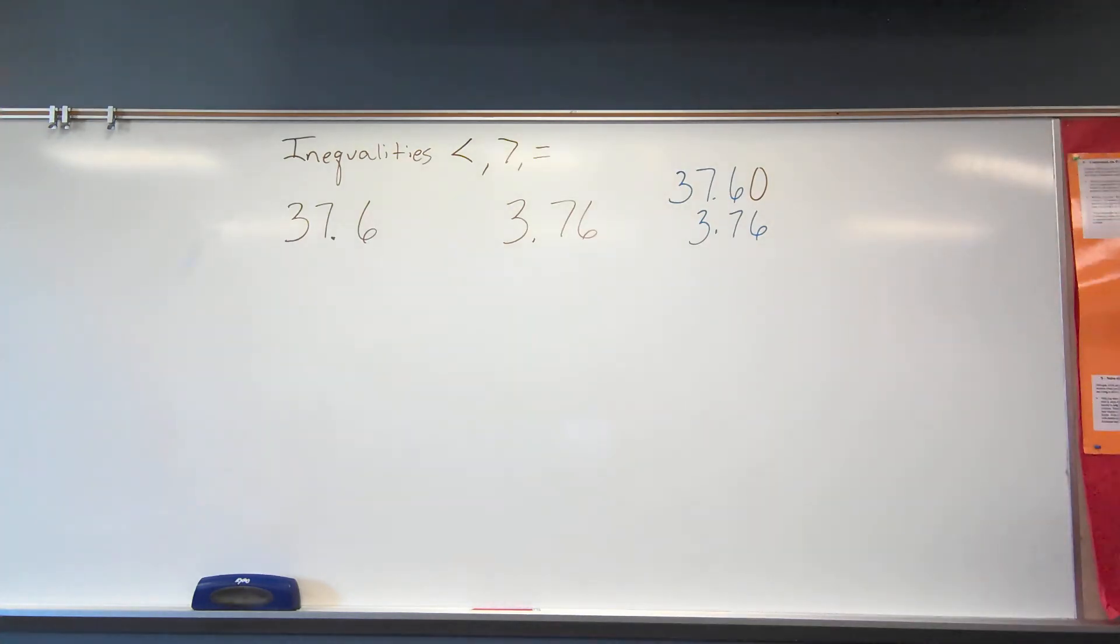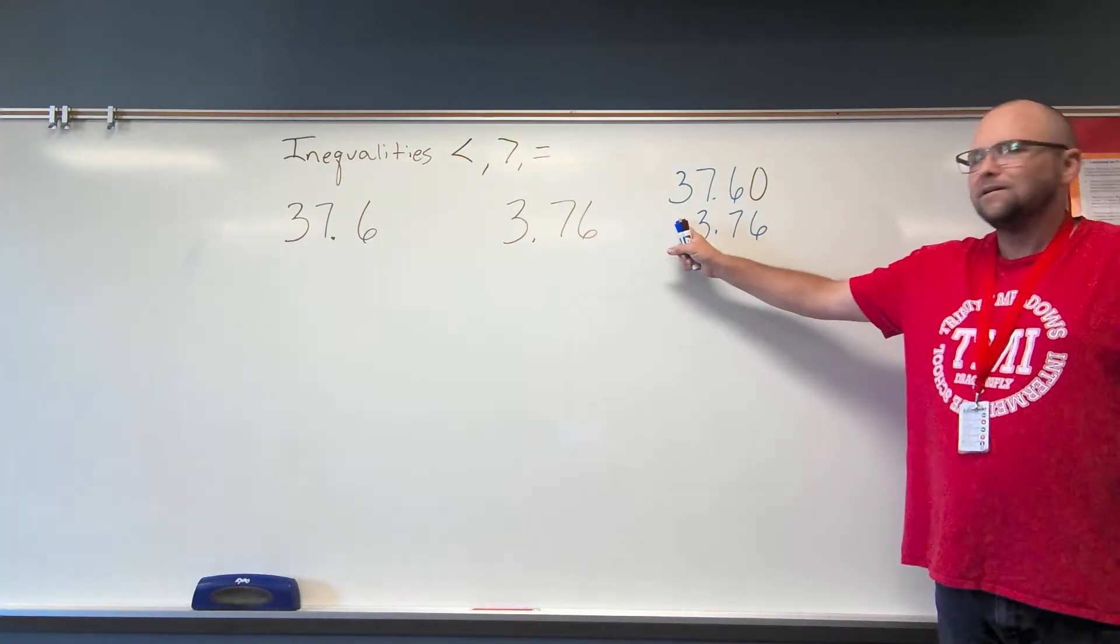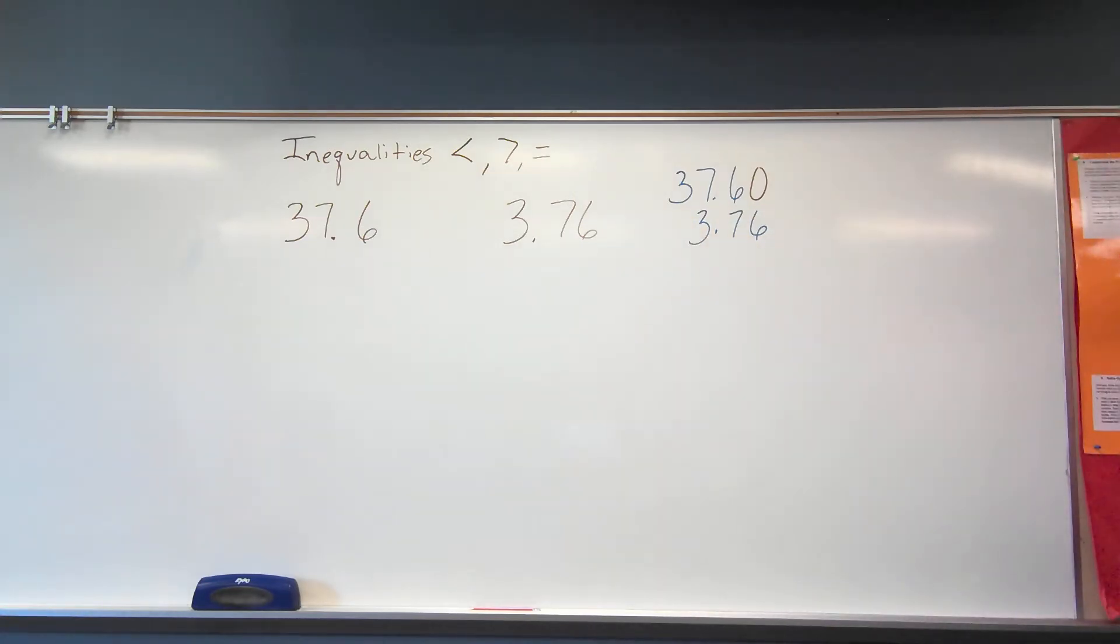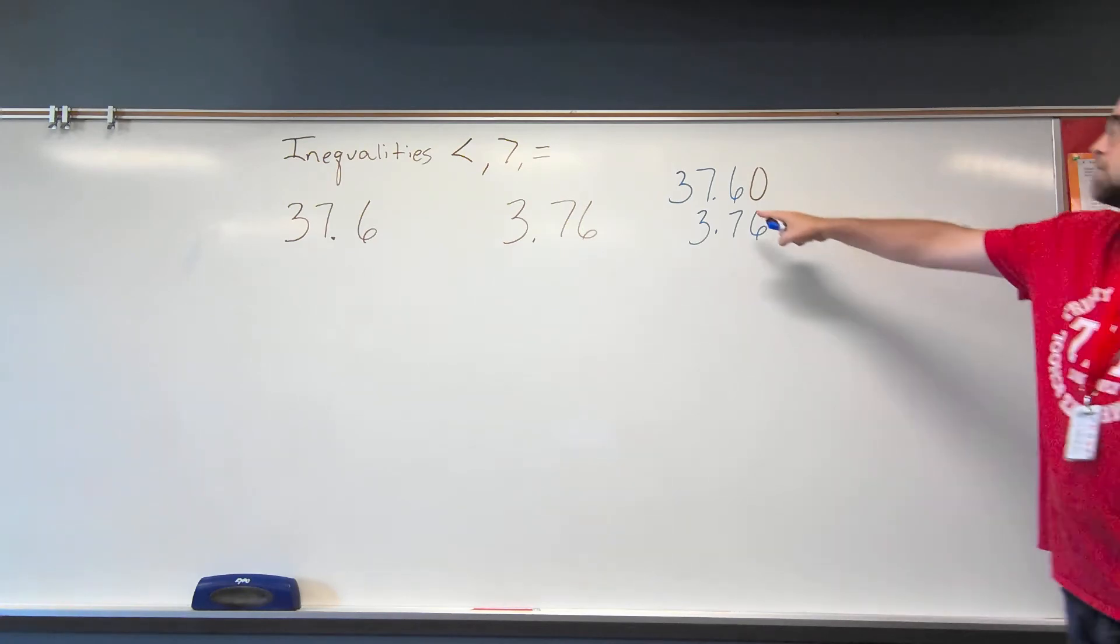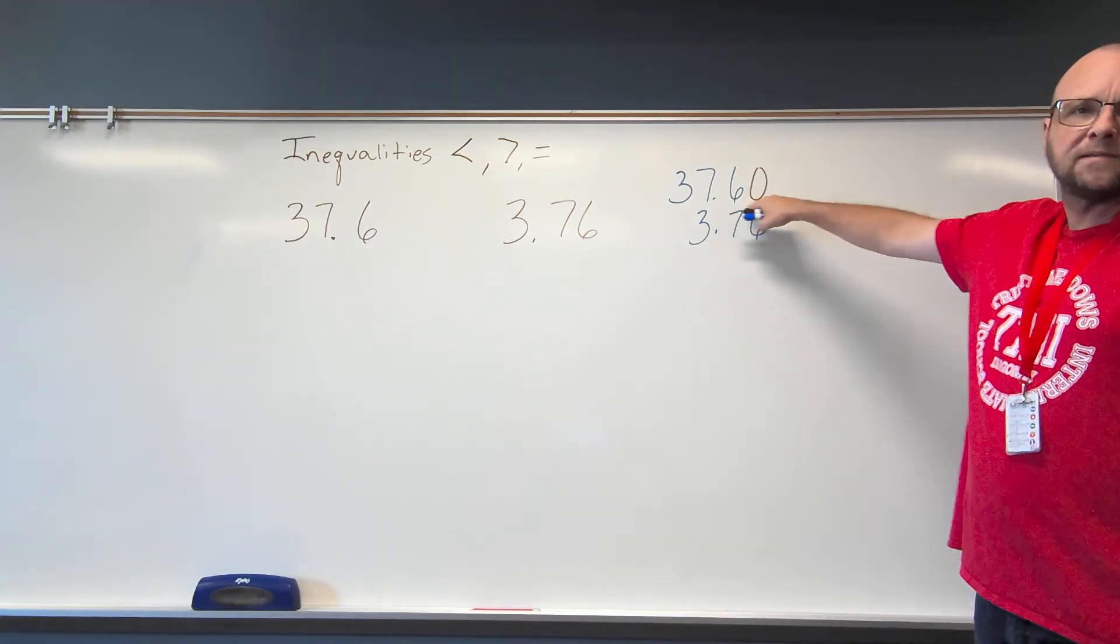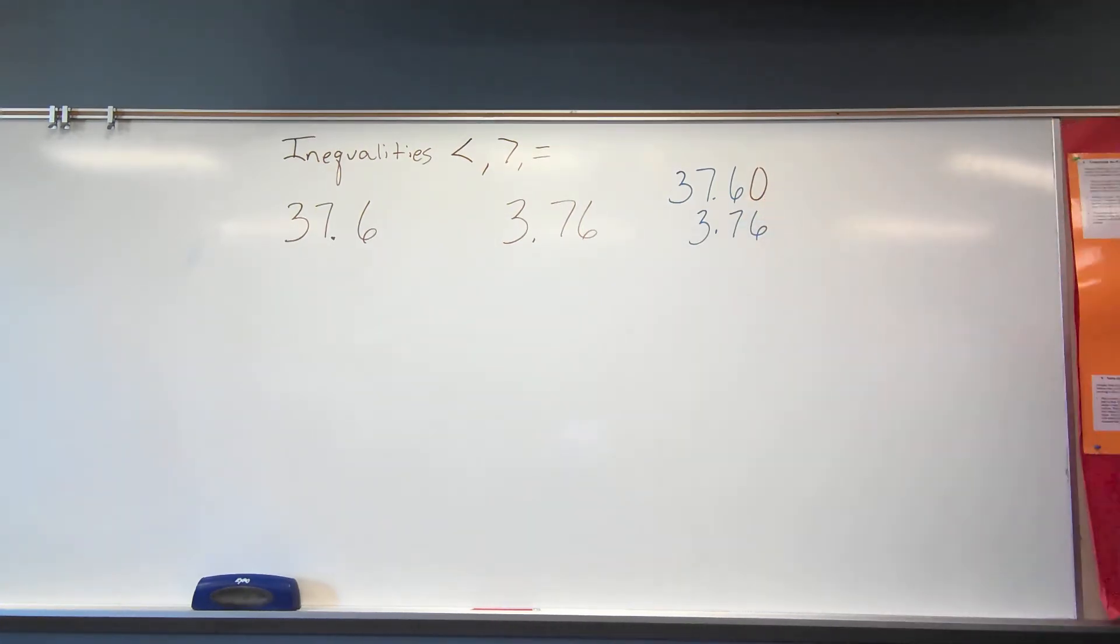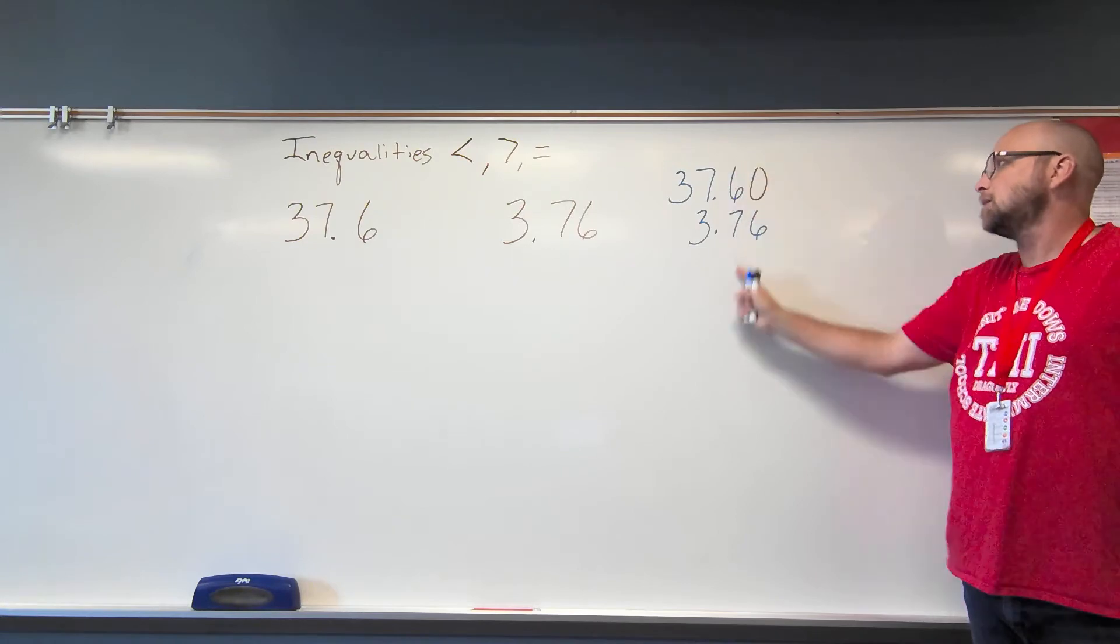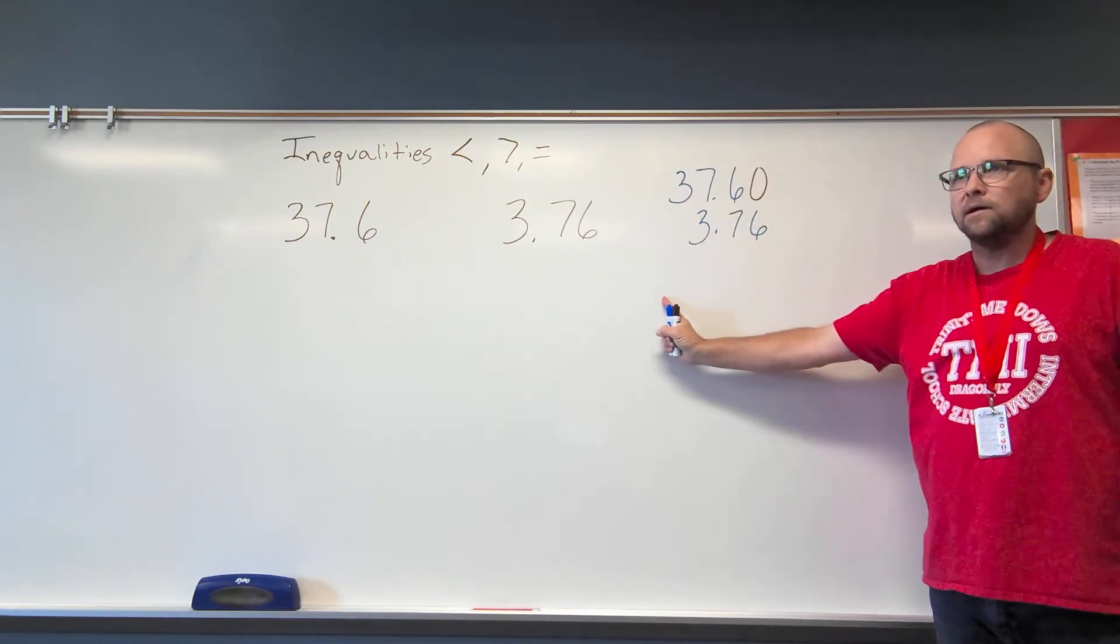So what I can do here is I can put a zero placeholder. Now I don't need to put one up here because I don't say 0, 3. It's just 3. But here, 76... I'm sorry, 6 tenths is the same as 60 hundredths. So now we have the thousandths place, or I mean the hundredths place, the tenths place, the ones place, and the tenths place all lined up.